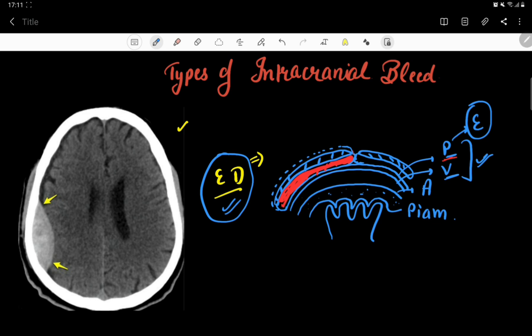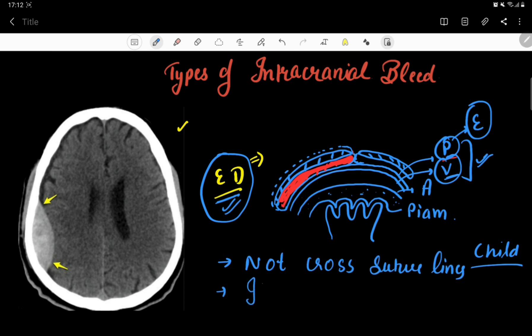There is an exception to this rule: in around 10 to 15 percent of cases in children, the epidural hematoma can cross the suture lines. But in adults, in most cases, the blood collected between the endosteal layer of dura mater and the skull bone does not cross suture lines. Additionally, since dural venous sinuses are present between the parietal and visceral layers of dura mater, this bleed can compress the dural venous sinuses.